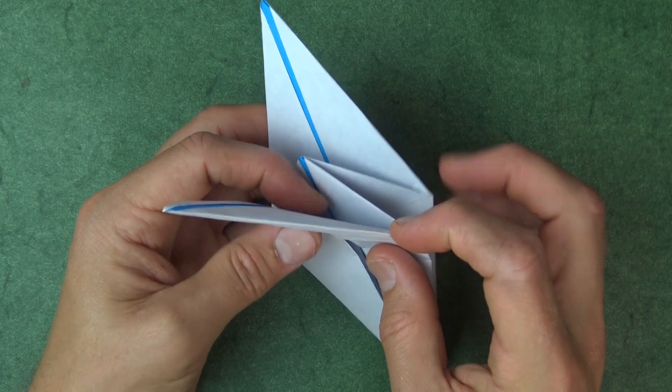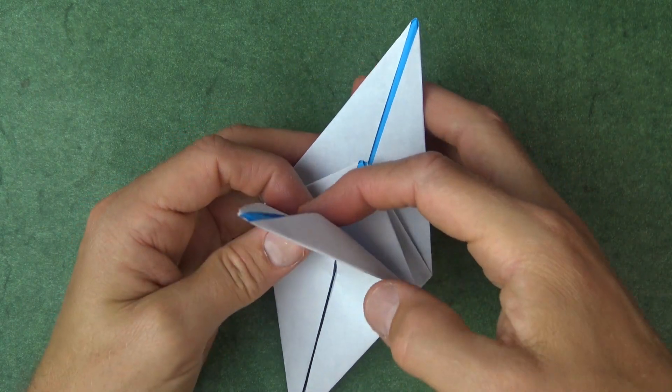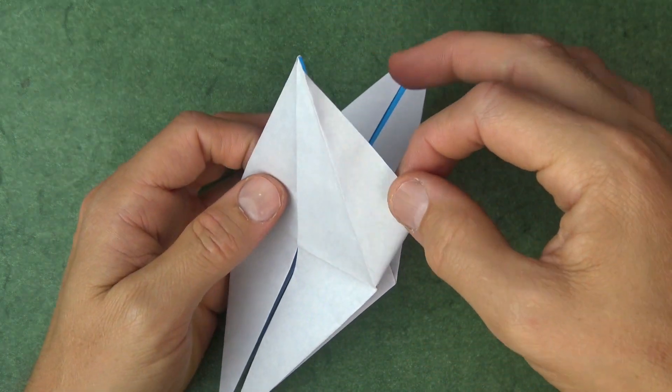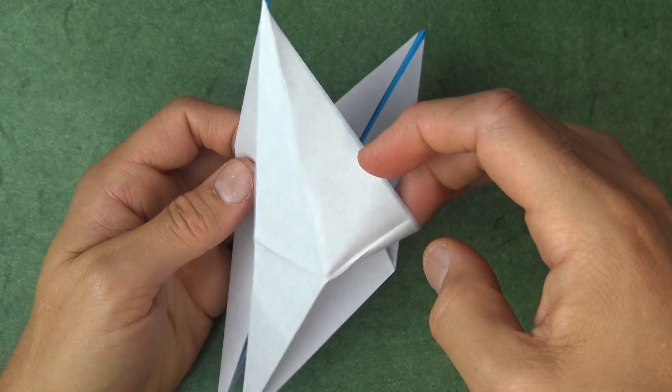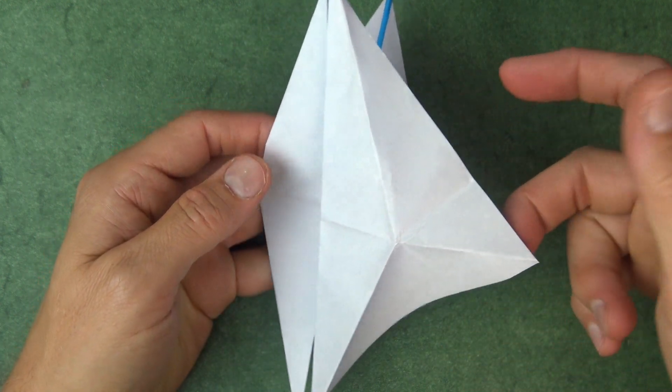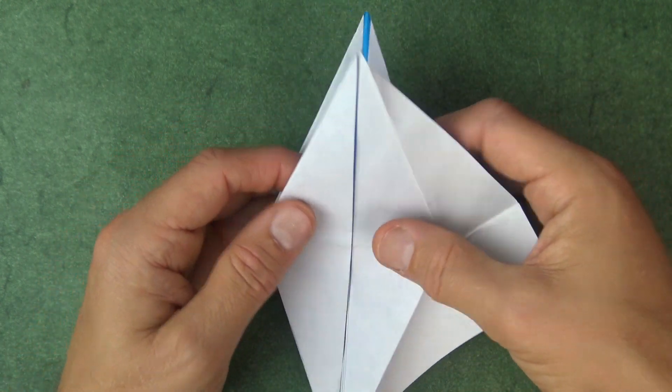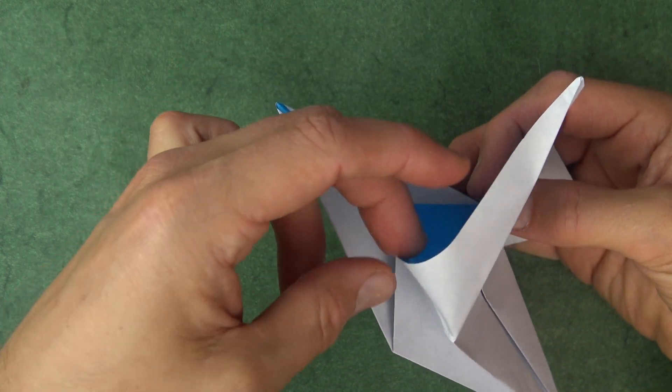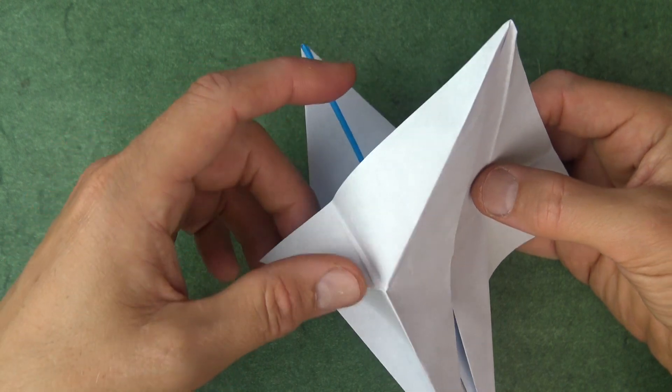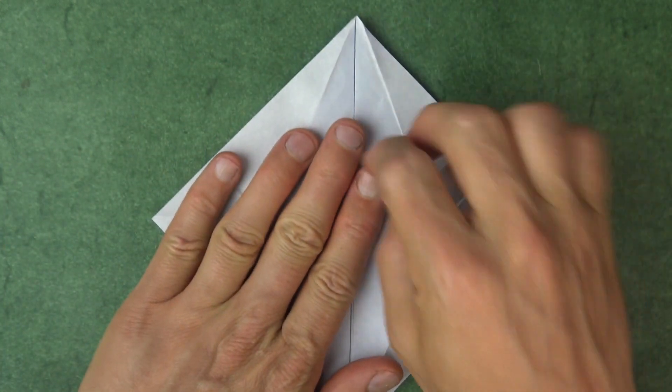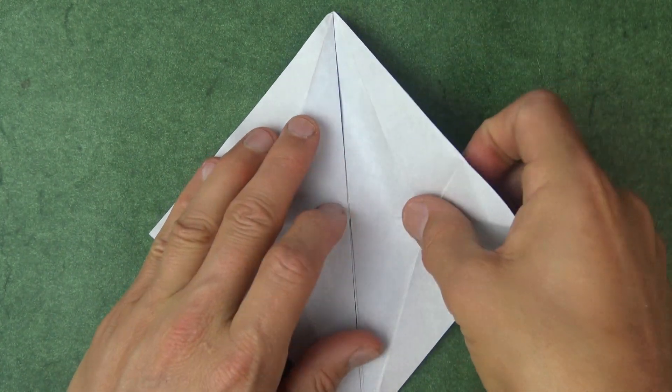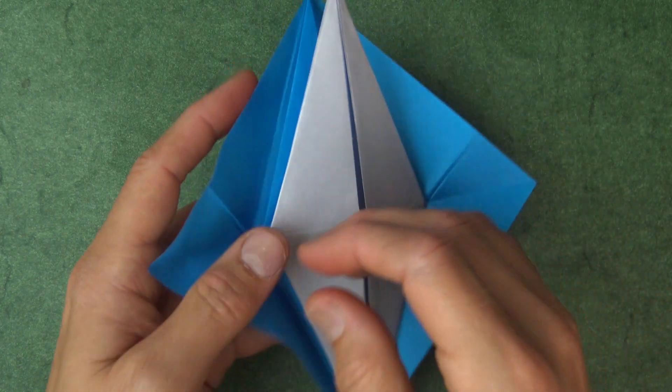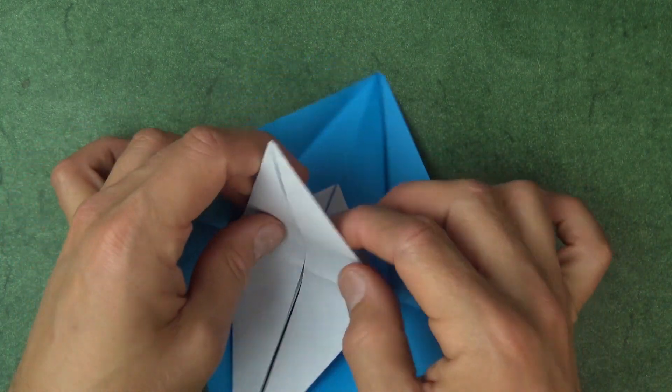And turn over and unfold the two side flaps, but you can leave this flap down for now. And now open this flap and lift it up like this. And flatten it.